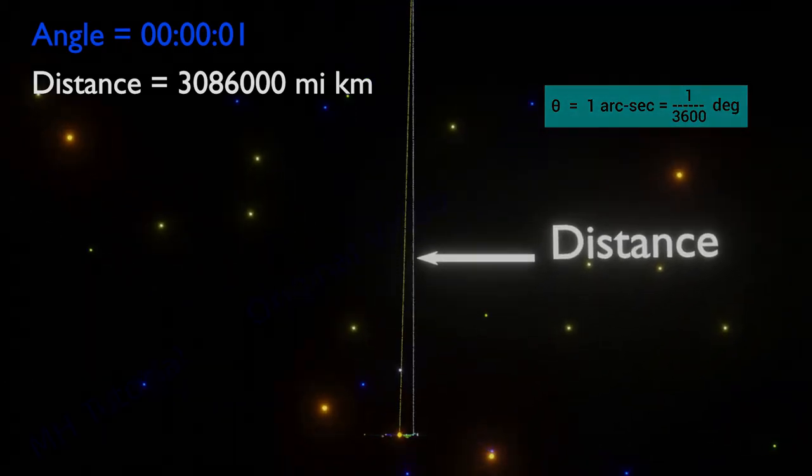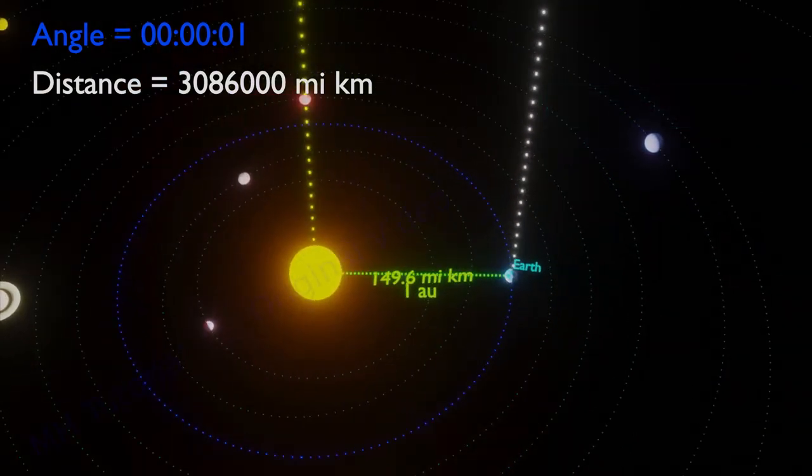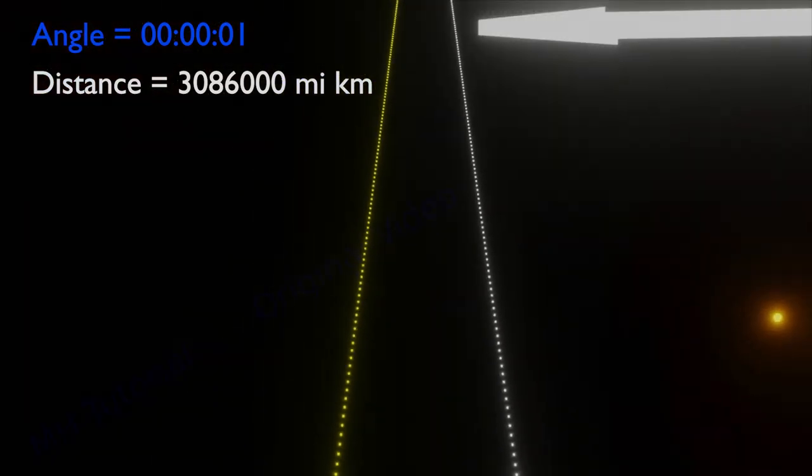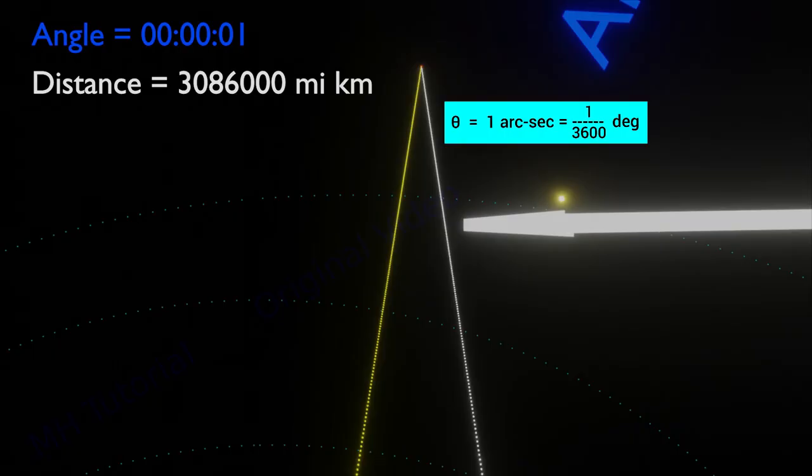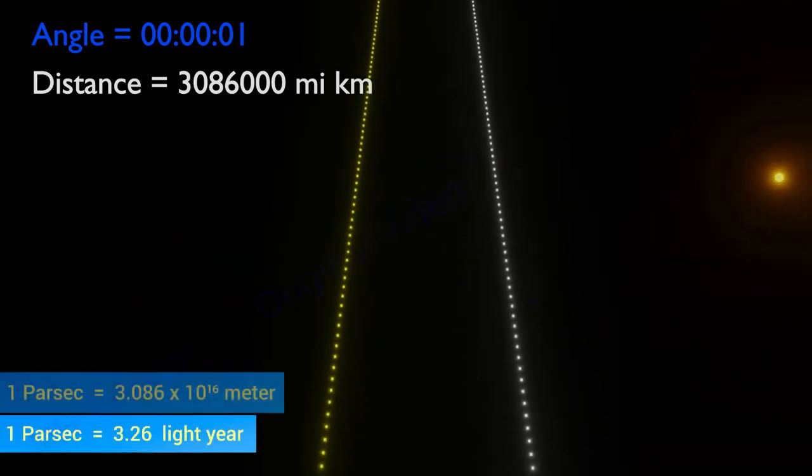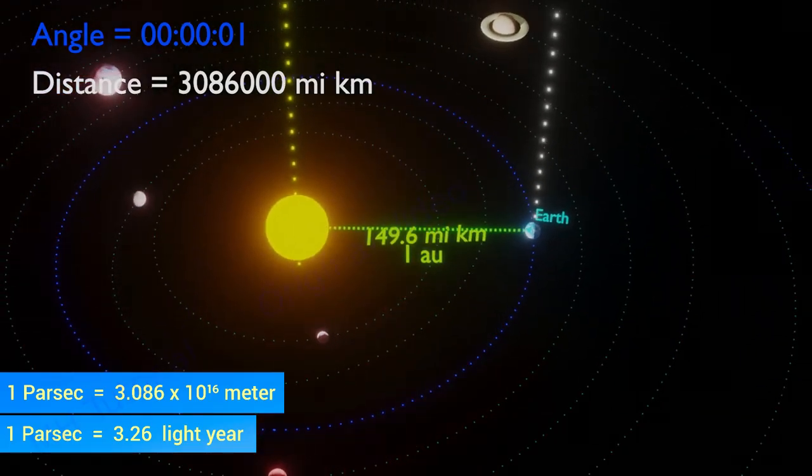Thus, 1 parsec is a distant point from the earth where the earth's orbital radius makes an angle of 1 arc second. And it is equal to 30.86 trillion kilometers, or 3.26 light years, or 3.086 into 10 to the power 16 meters in SI method.